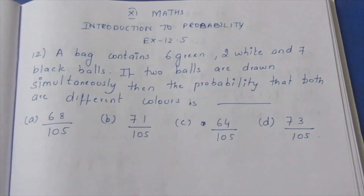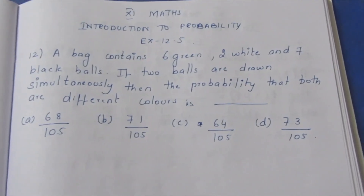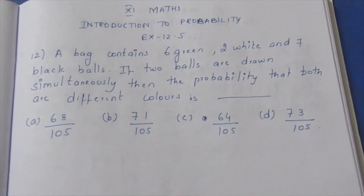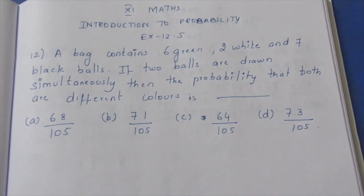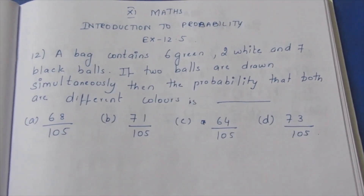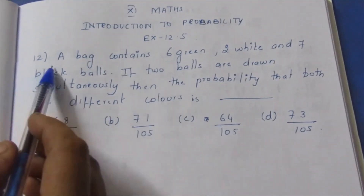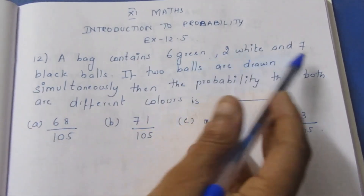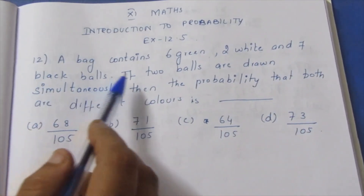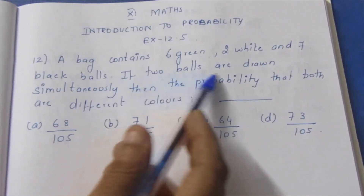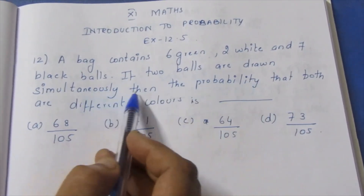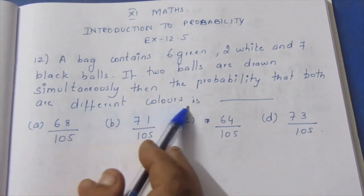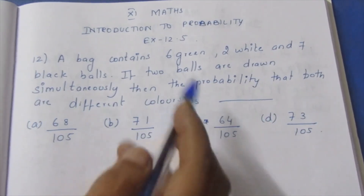Hello viewers. I am Aitli. In 11th Max, Introduction to Probability, Exercise 12.5. Let's look at the question: A bag contains 6 green, 2 white, and 7 black balls. If 2 balls are drawn simultaneously, find the probability that both are of different colours.